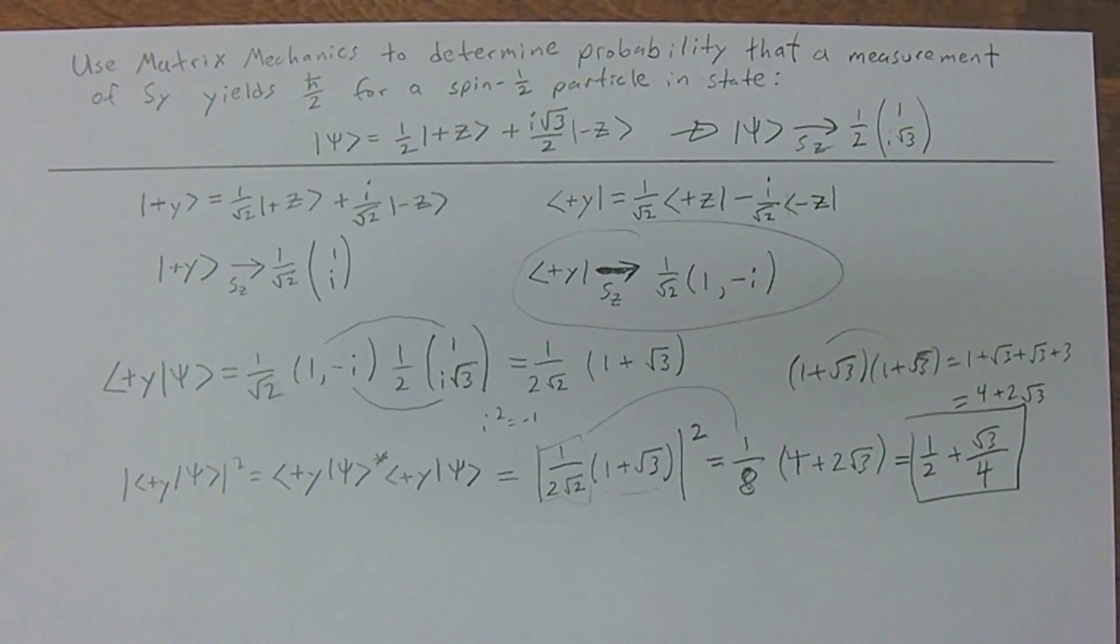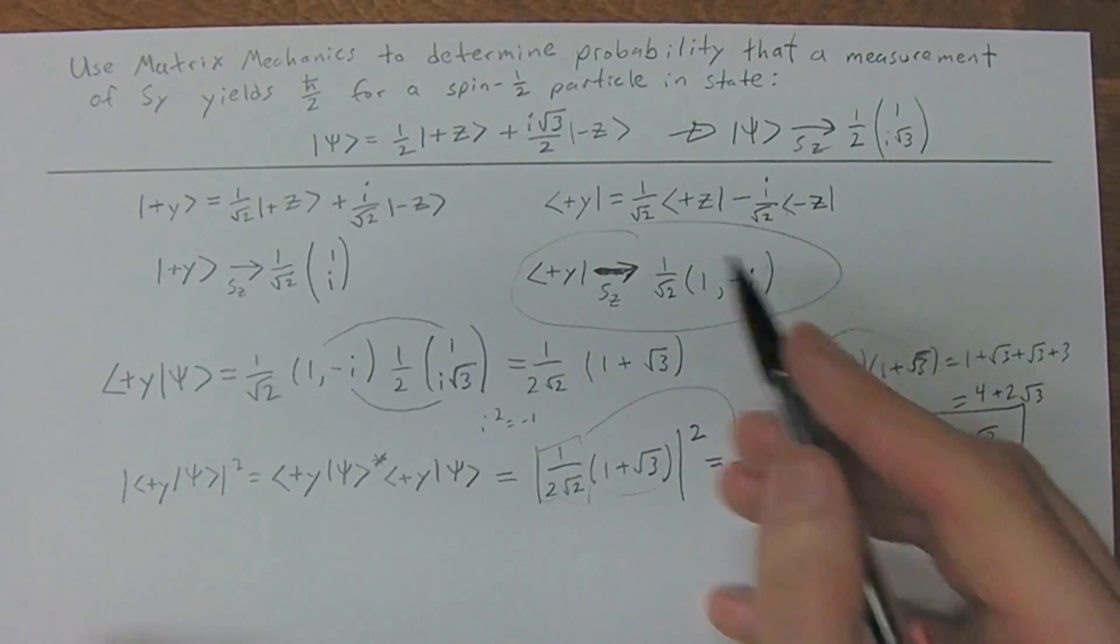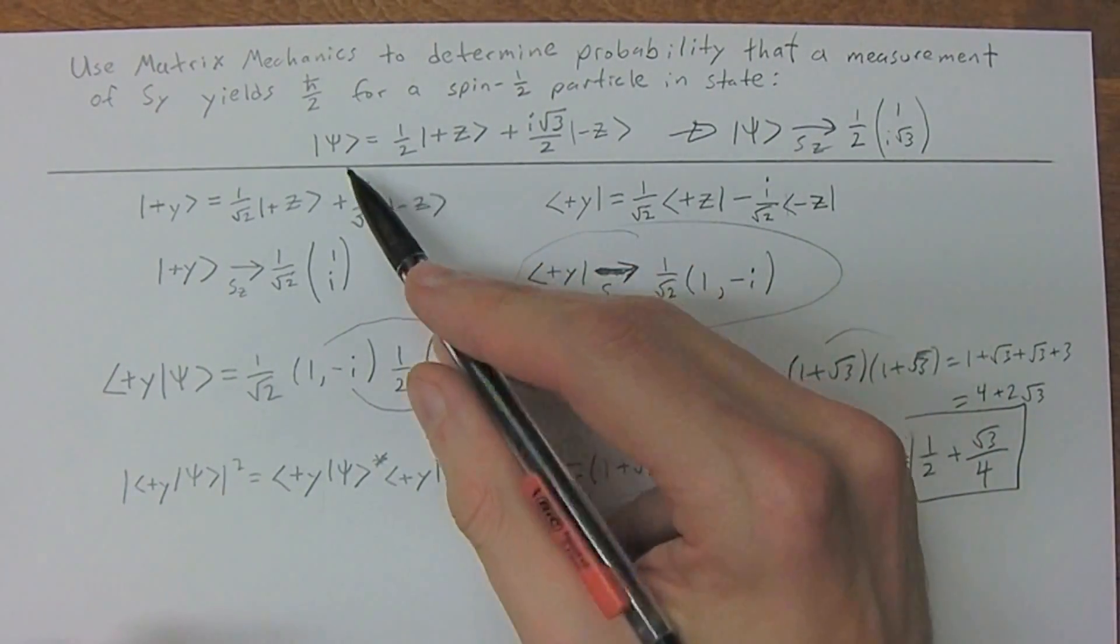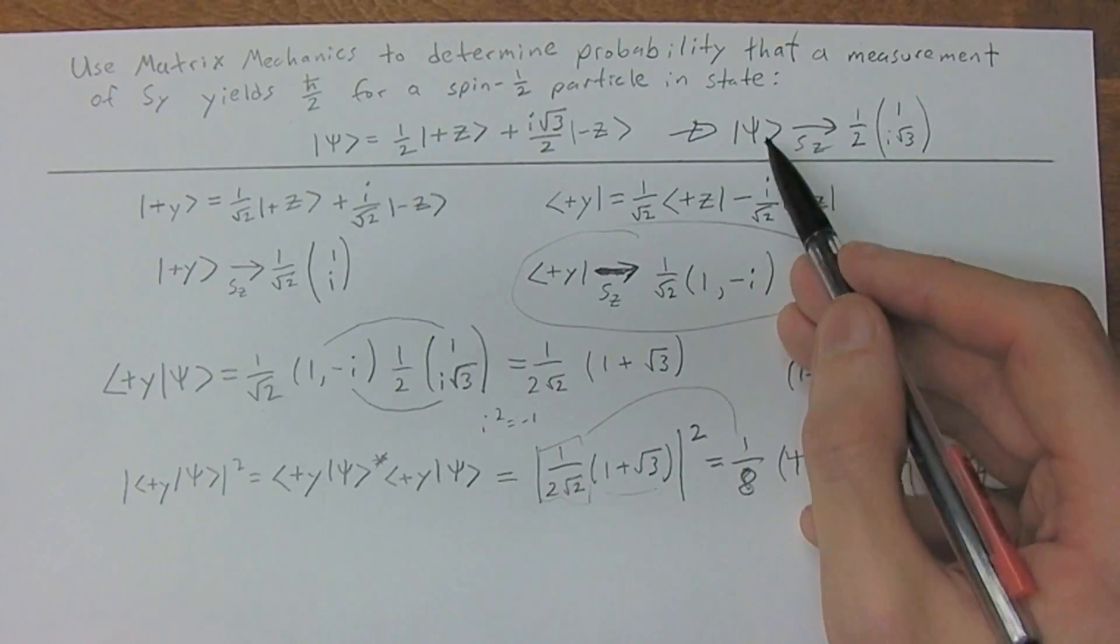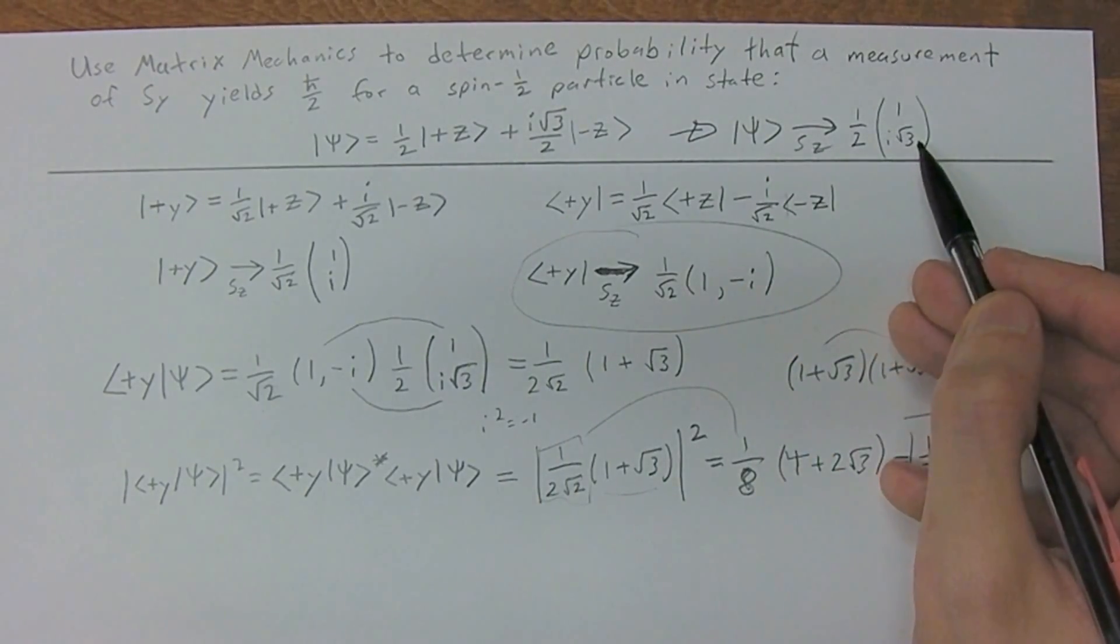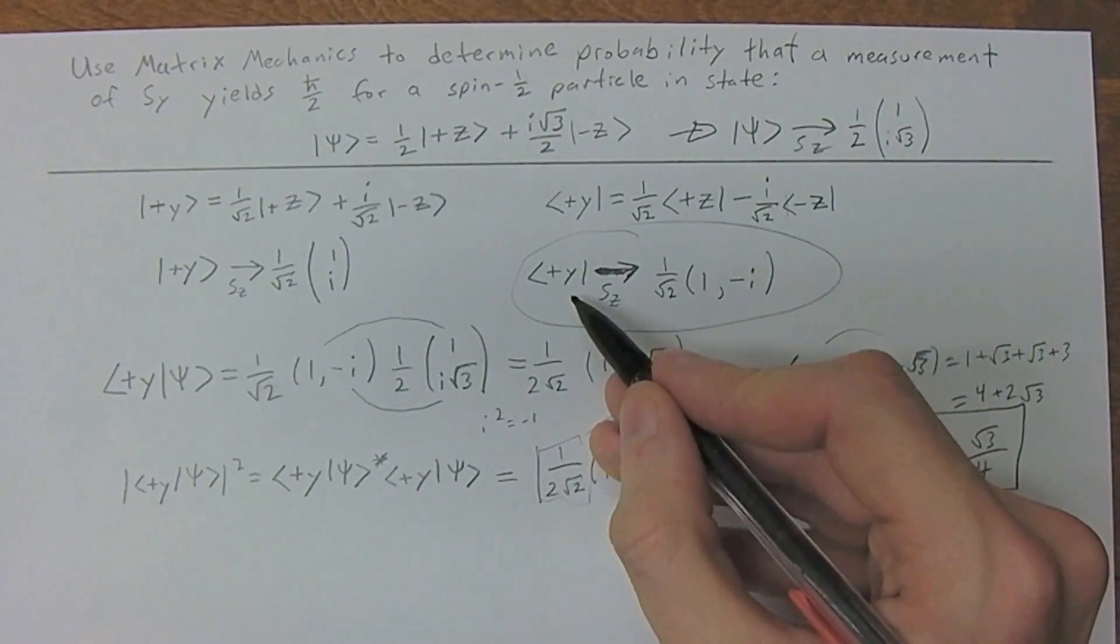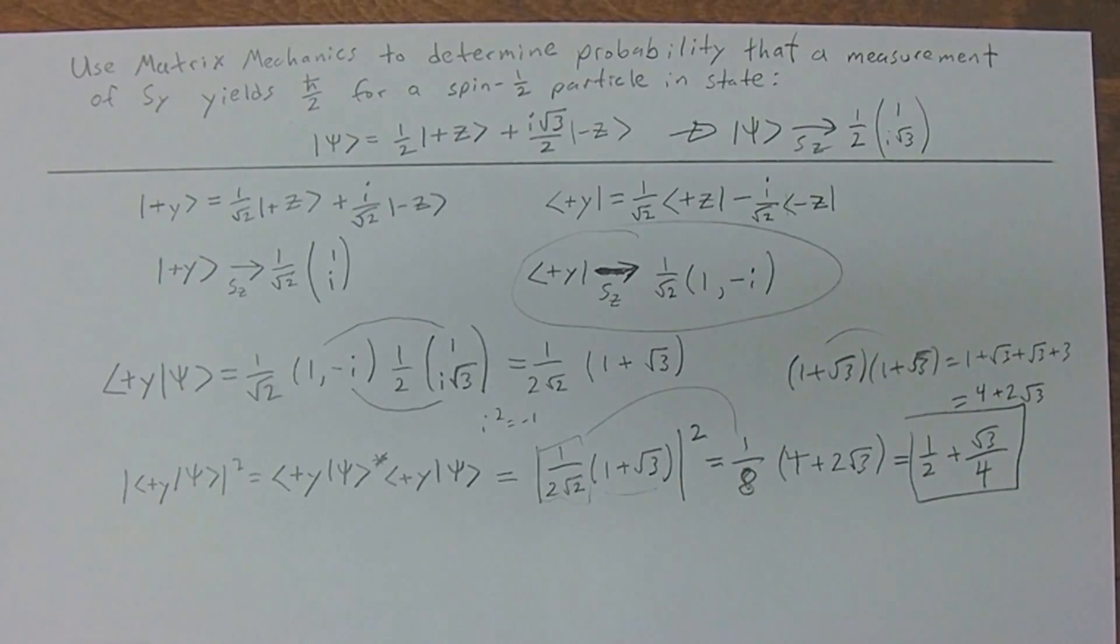Except now we did it with matrix mechanics. So however you want to do it, it doesn't really matter, but it is important to make this connection, that you can actually represent your kets as column vectors, and you can represent your bras as row vectors. Thank you for watching, and have an excellent day.